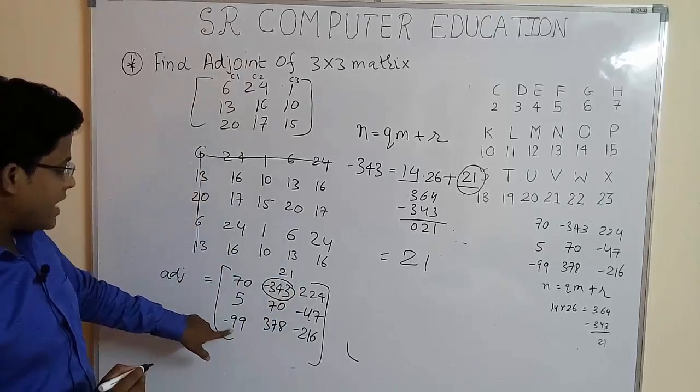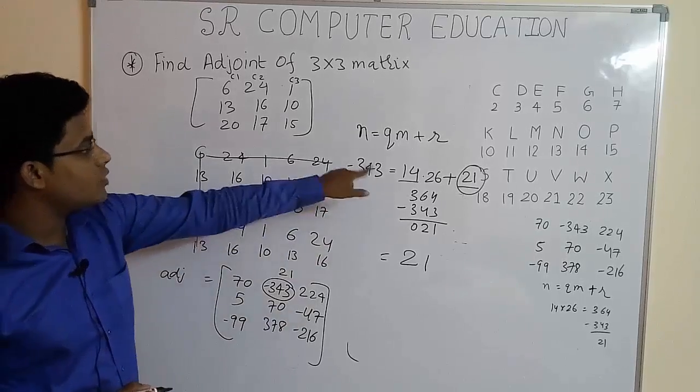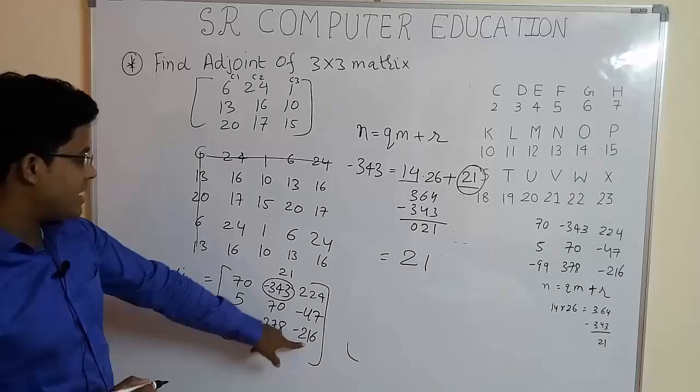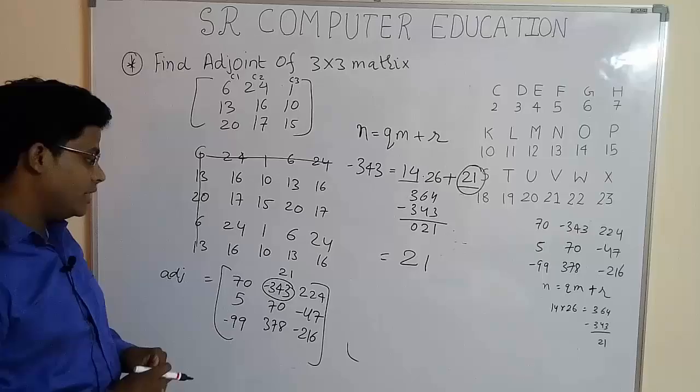Similarly, for minus 99, you have to do the same procedure. For minus 47, you have to do the same procedure. For minus 216, you have to do the same procedure. And rest of the positive values, you have to keep it as it is.